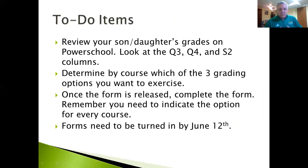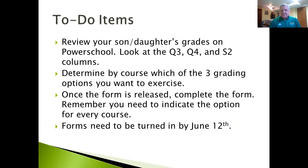As a review, what families need to complete by June 12th: first, review your student's grades on PowerSchool — look at the Q3 column, Q4 column, and S2 column. Then determine, for each course, which of the three grading options you want: the semester two grade, the quarter three grade, or the pass overall. Complete the form by course and submit by June 12th. A question from the chat: can a student do pass-fail for just one class? Yes — you can do pass-fail for one class, two classes, all of them, or none. Each option is chosen individually by course.